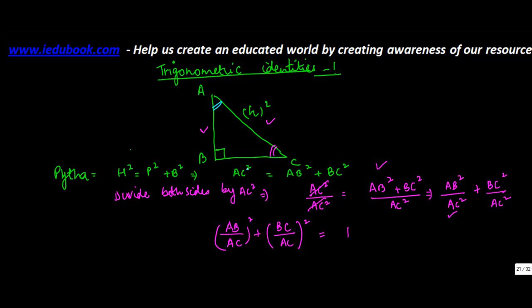Now from angle A perspective, AB upon AC is cos A, so square will give you cos² A. Plus BC upon AC, this side upon this side, is sin A, so this will give you sin² A = 1.